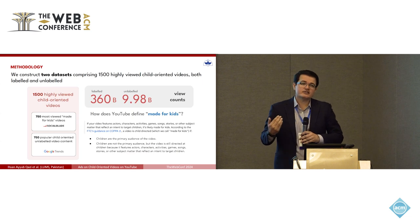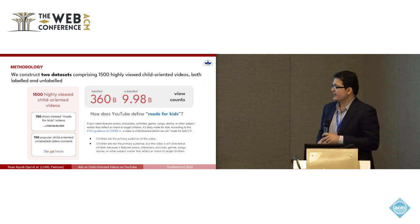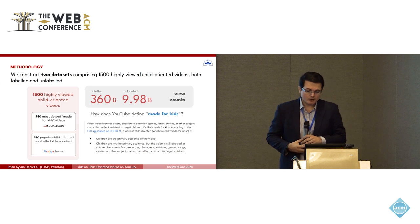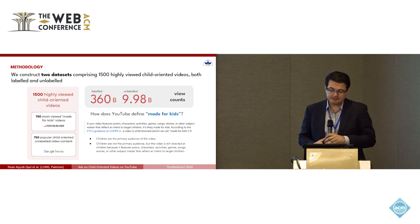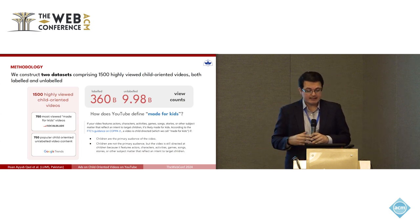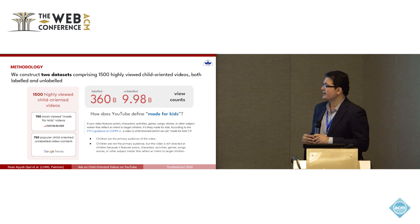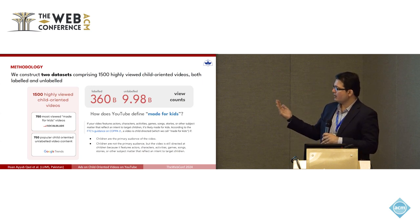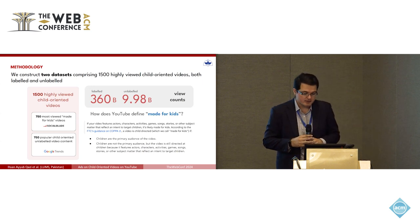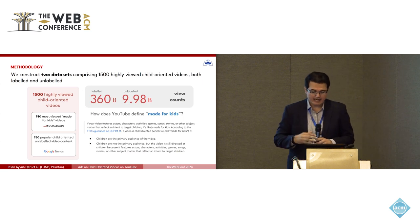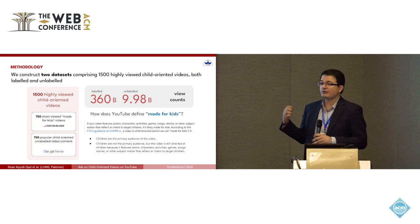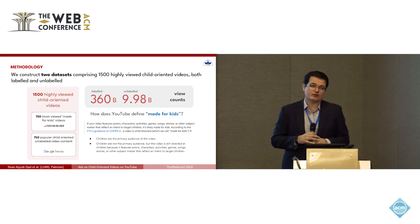It's instructive to discuss how YouTube defines made-for-kids. According to YouTube, a video is child-directed if children are the primary audience, or if children are not the primary audience but the video is still directed at children because it features actors, characters, activities, games, songs, stories, or other subject matter that reflects an intent to target children.